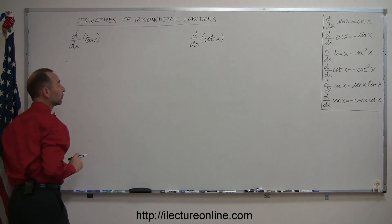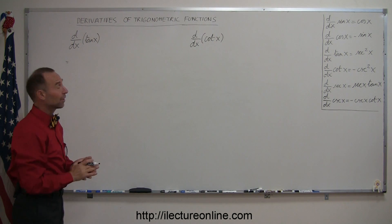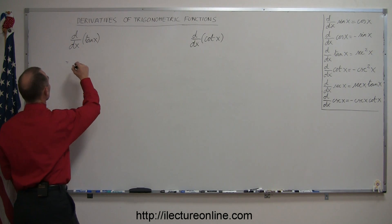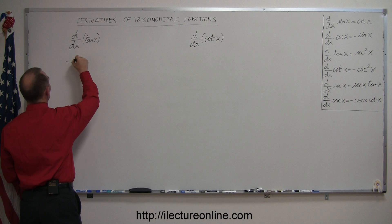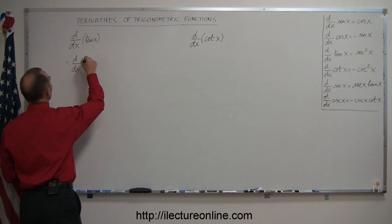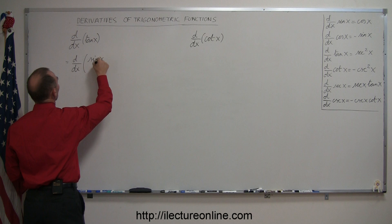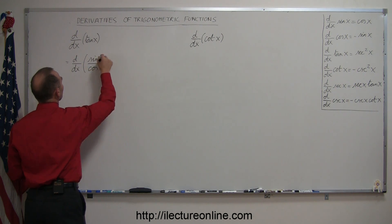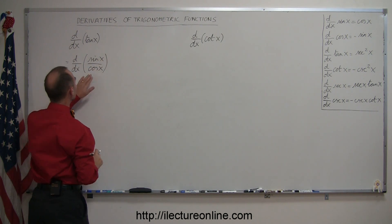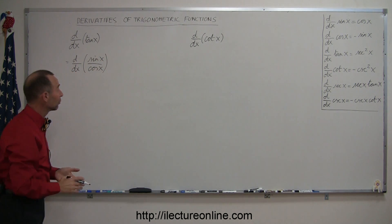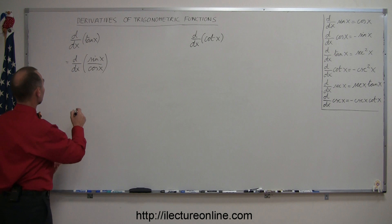First of all, we're going to rewrite the tangent of x as sine over cosine. So that's the same as saying we're going to take the derivative of sine of x over cosine of x. And then if we take the derivative of that, we have to use the quotient rule.